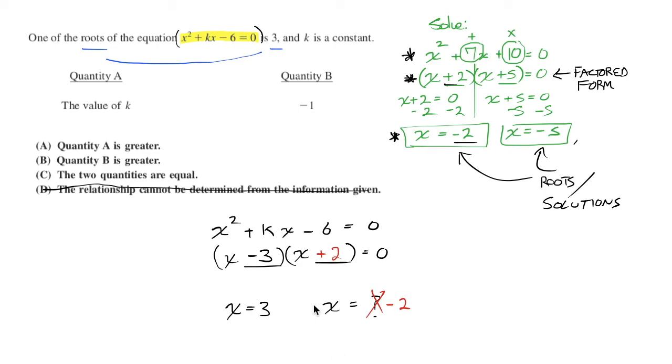But more on point with the problem, now we know, of course, that the sum of these two numbers is negative 1. 2 plus negative 3. Remember, we have to multiply to this number and add to this number. So from getting 2 plus negative 3, we can see that k must actually be equal to negative 1, which means, miracle of miracles, the two quantities are, in fact, equal.